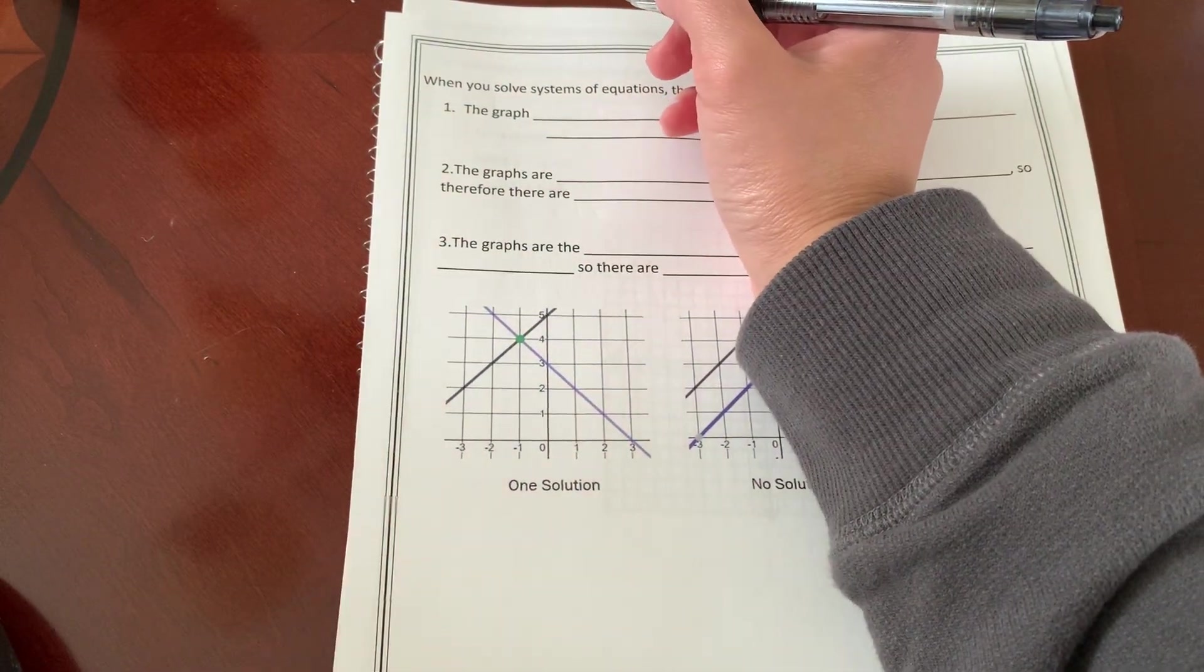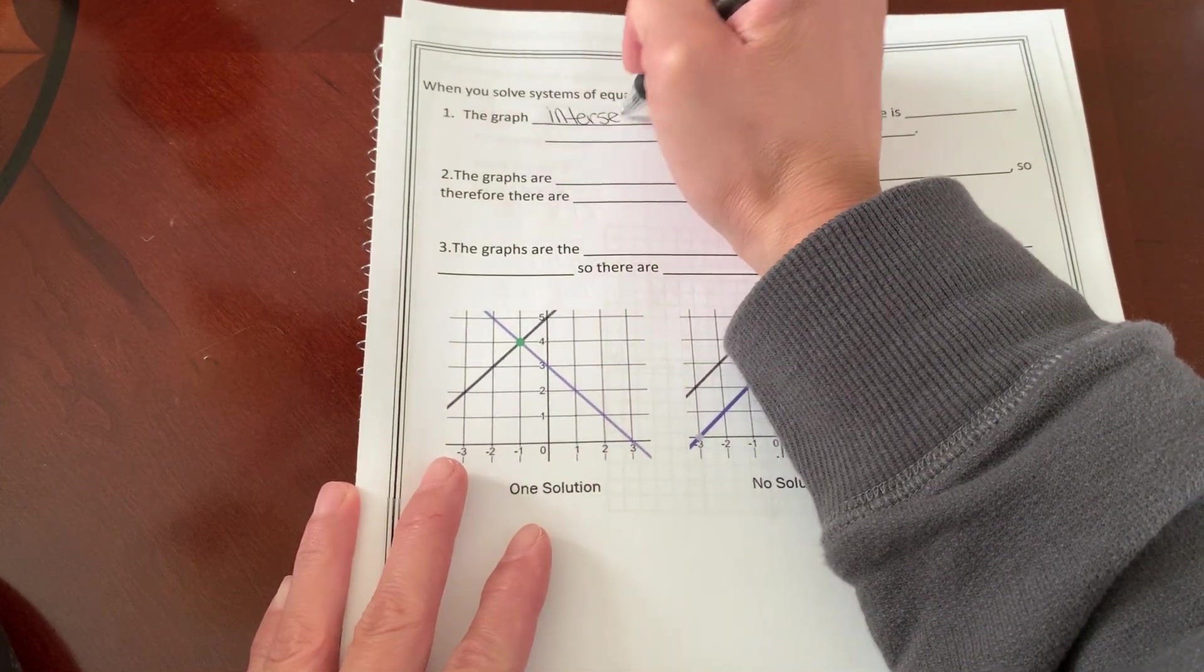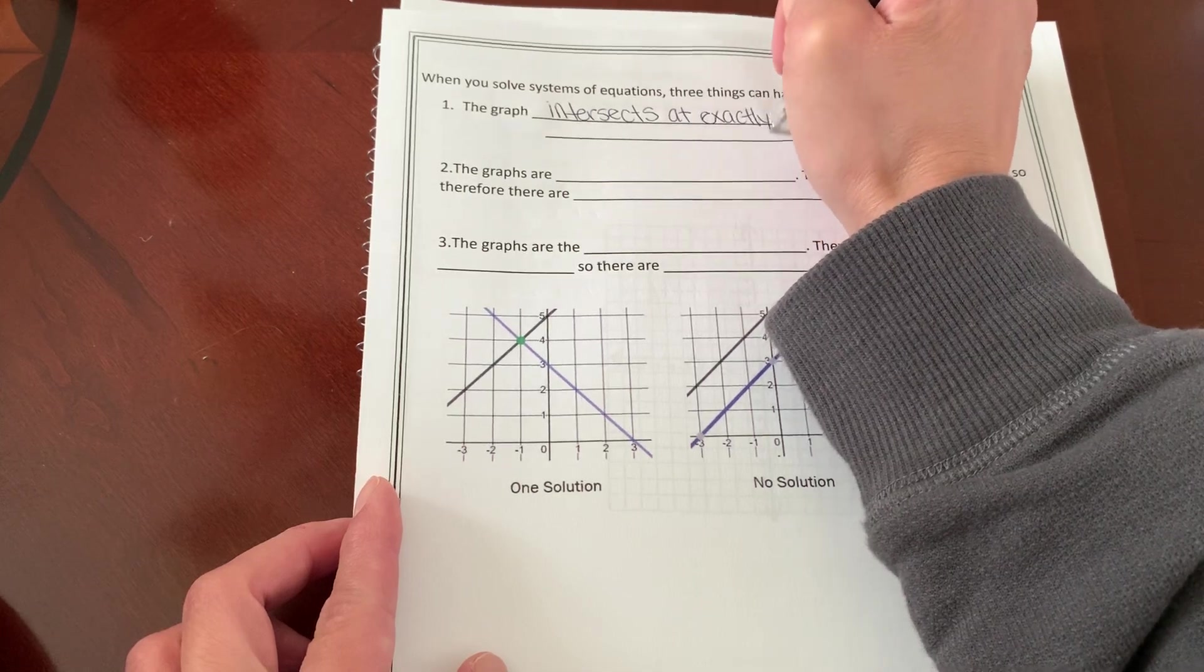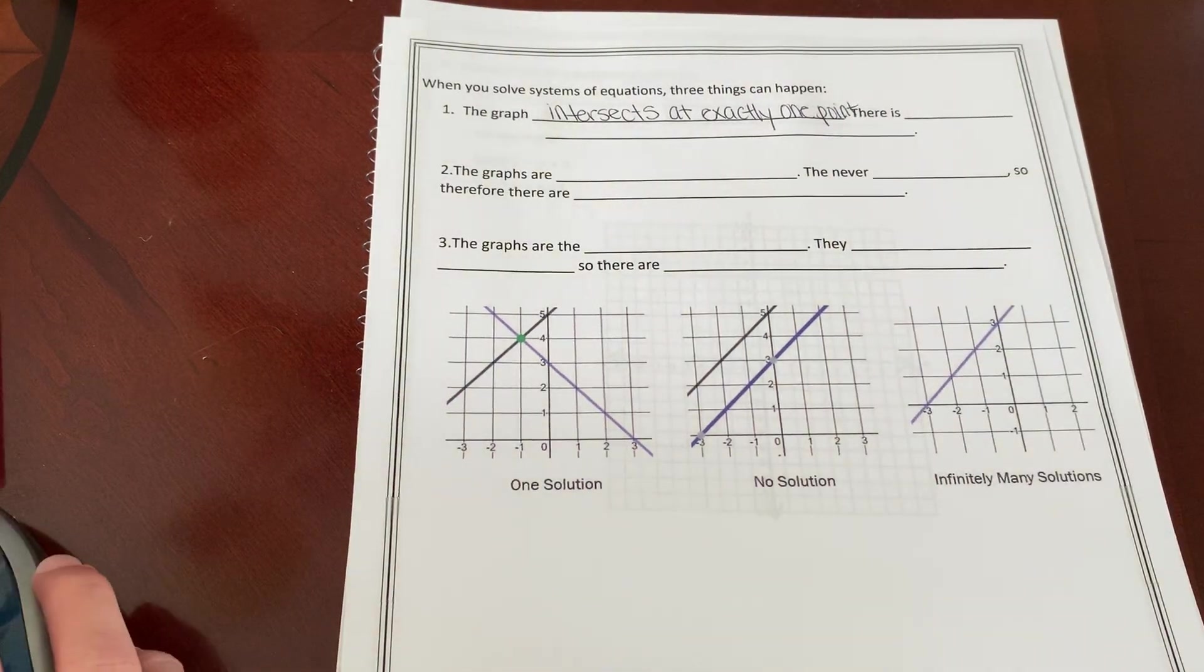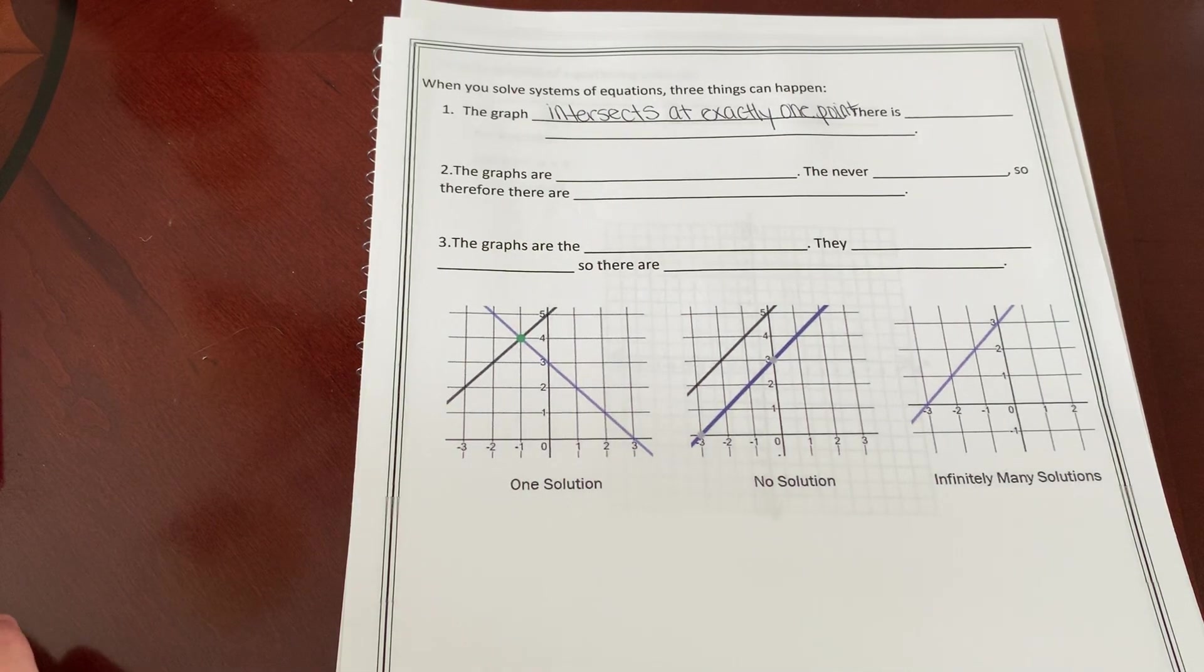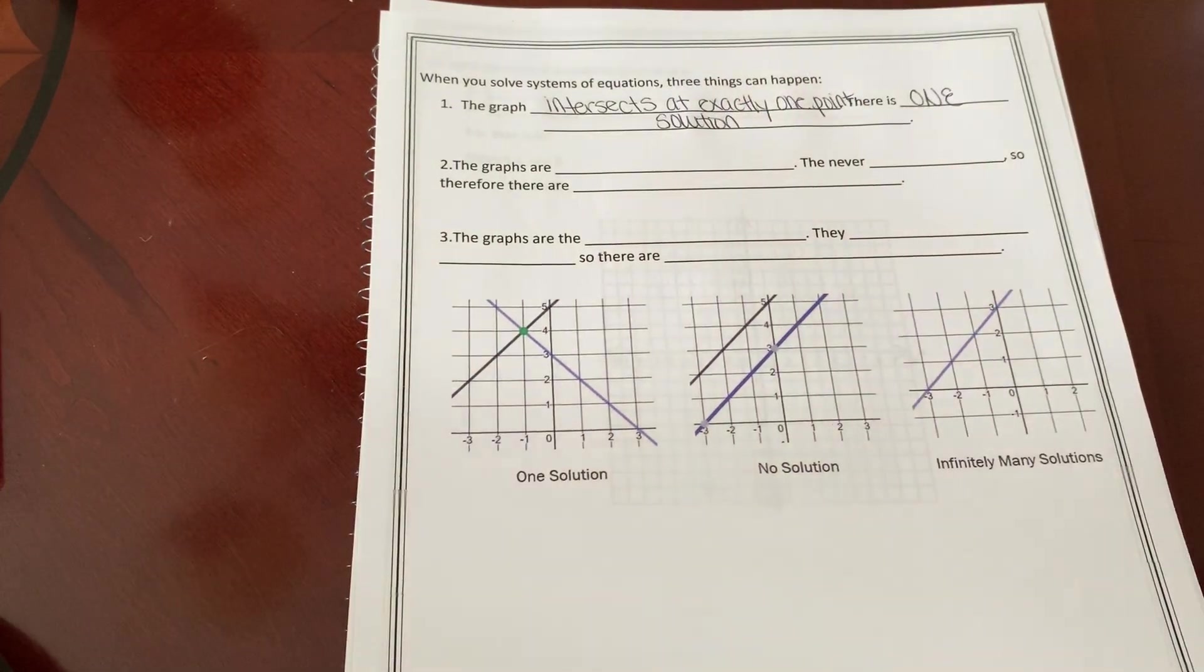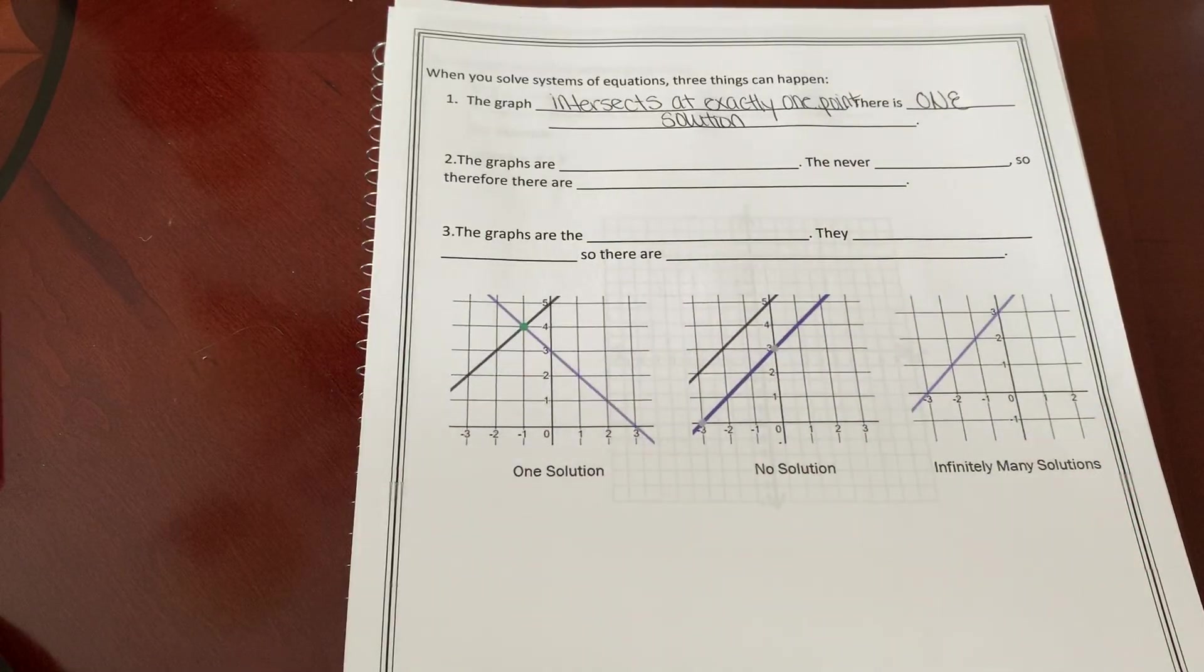The graphs can intersect at exactly one point. And if this happens, there is one solution, which I just showed you, which was on this first page. There is one solution and it is at the point in which they cross. Okay, that's pretty simple.